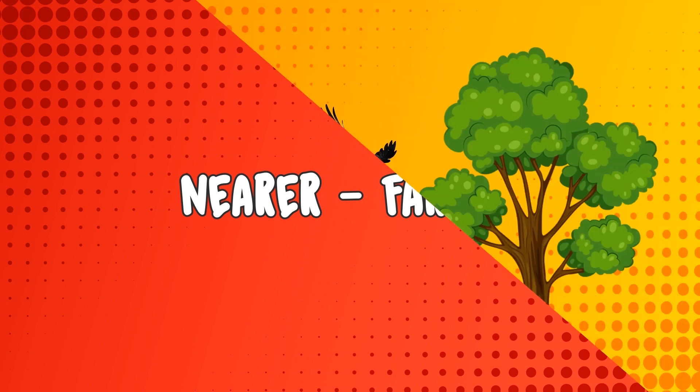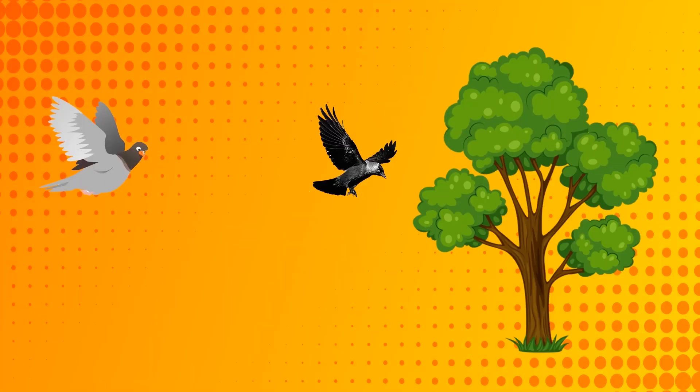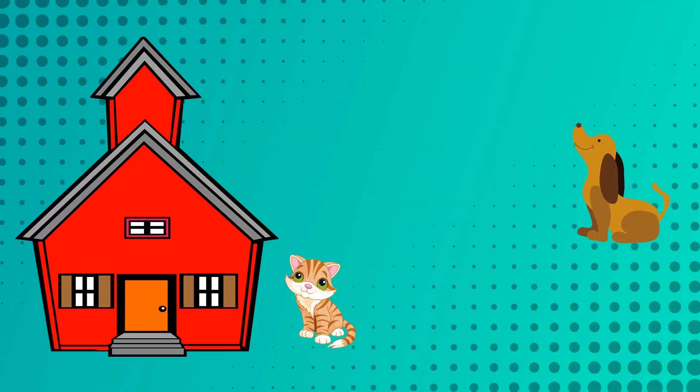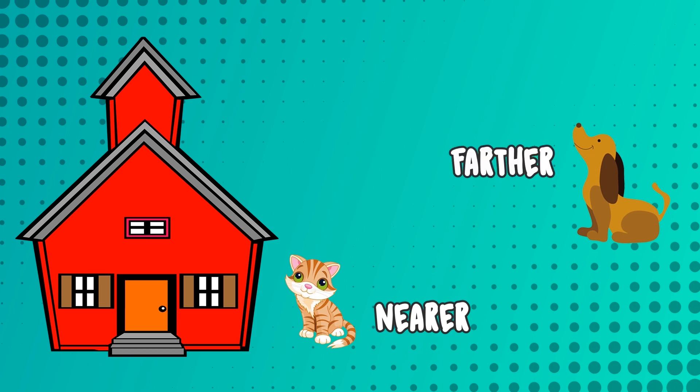Nearer and further: observe this picture carefully. The crow is nearer to the tree. The pigeon is further from the tree. In this picture, the cat is nearer to the house and the dog is further from the house.